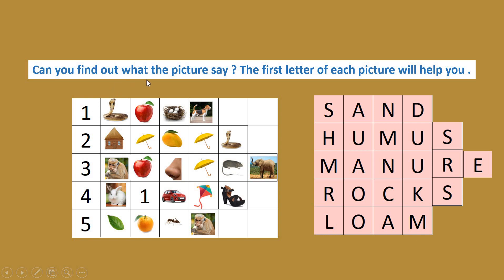Next question: Can you find out what the picture says? The first letter of each picture will help you. For example, snake gives S, April gives A, nest gives N, and dog gives D — so it becomes 'sand.' Second: hut gives H, umbrella gives U, mango gives M, umbrella again gives U, snake gives S — so it becomes 'humus.'